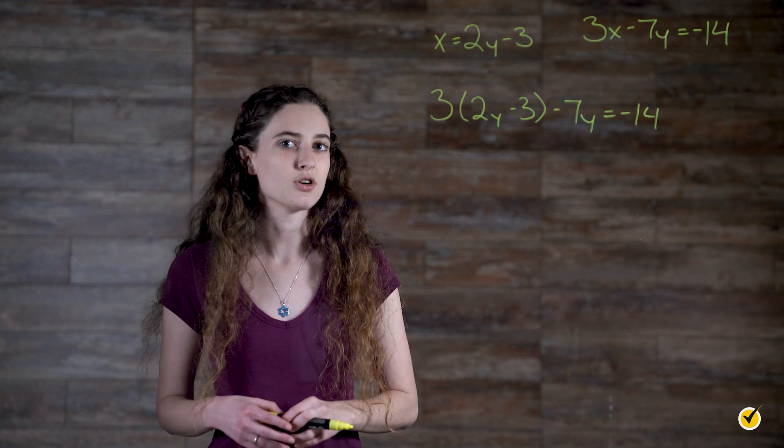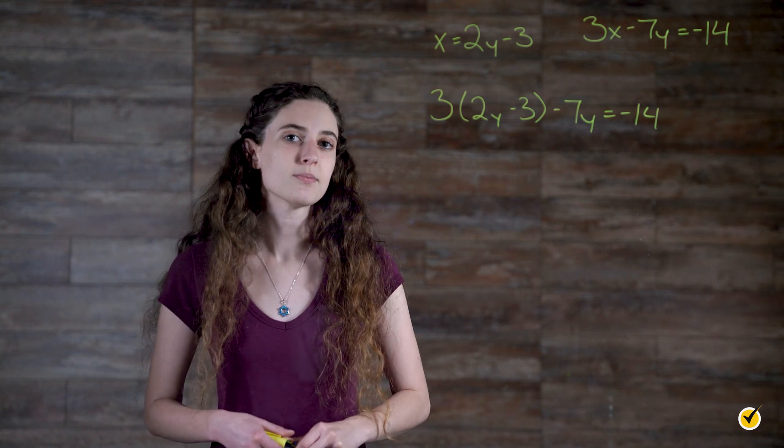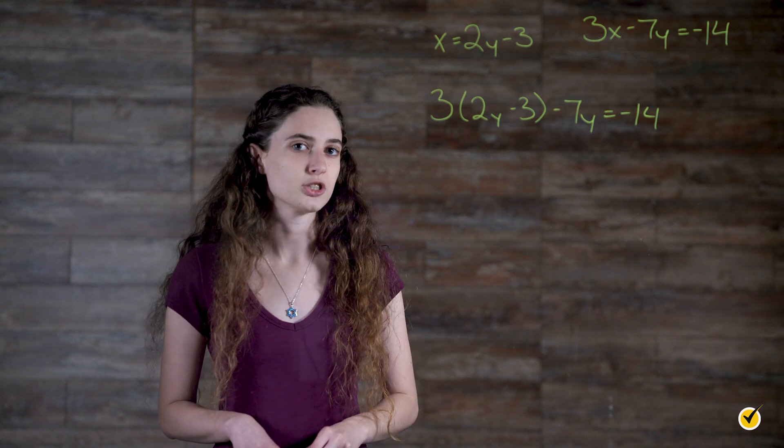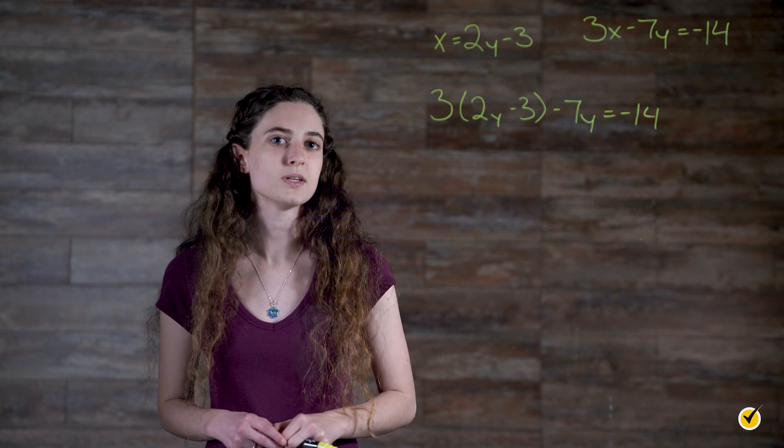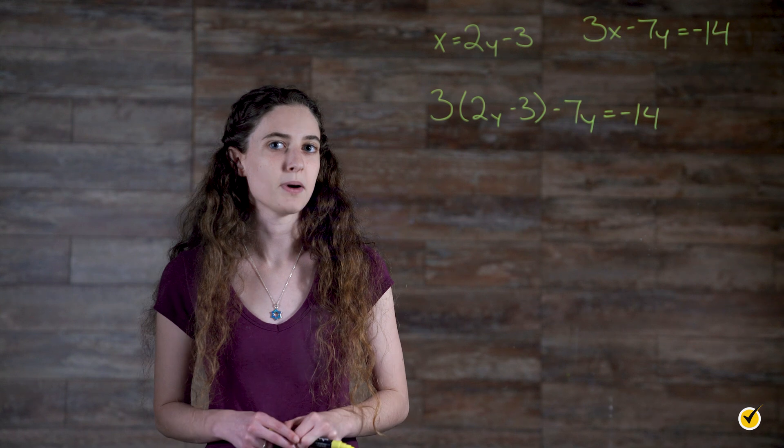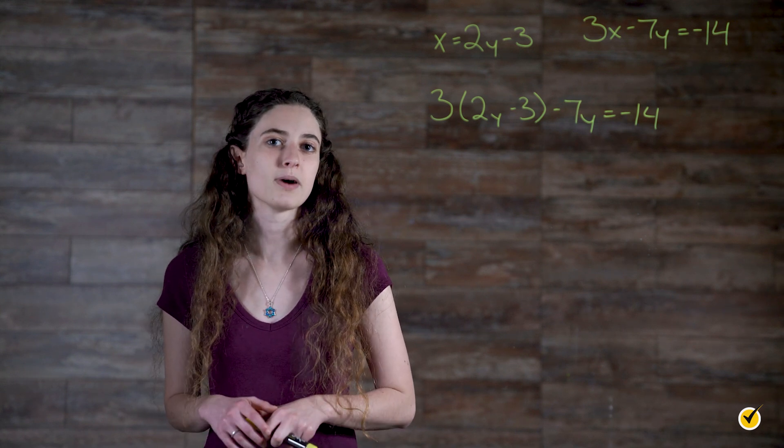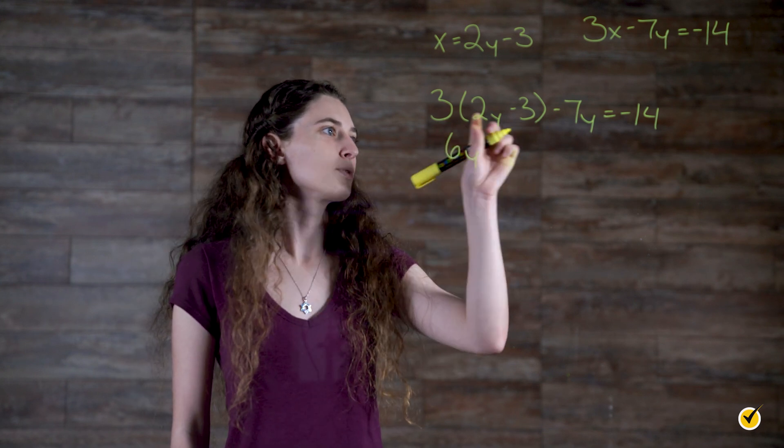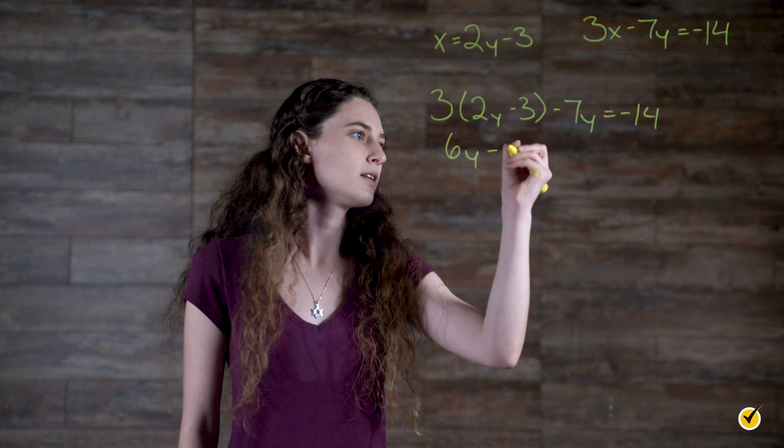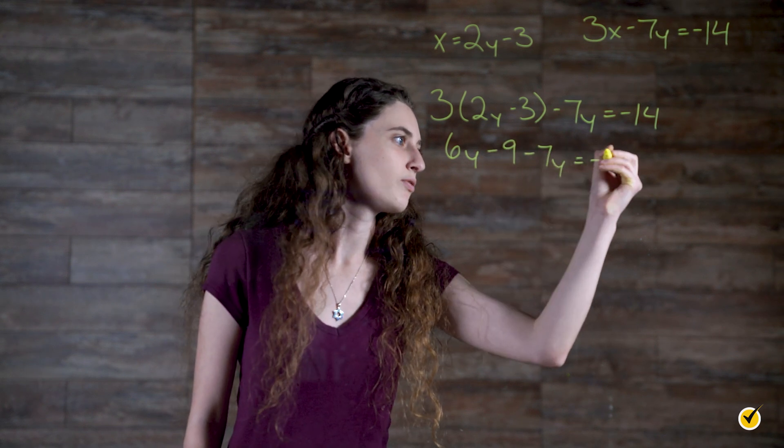Because the expression in parentheses is already simplified and it is not being raised to a power, the next step in the order of operations is multiplication. The coefficient of 3 in front of the parentheses must be distributed into the parentheses by multiplication. That means that we need to multiply each term by 3. 3 times 2y gives us 6y. 3 times negative 3 gives us negative 9. Minus 7y equals negative 14.